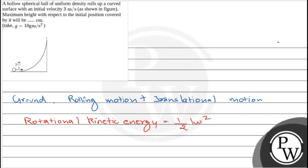I is the moment of inertia for a hollow sphere, which is 2/3 mr squared. Omega is the angular velocity, which is v by r.